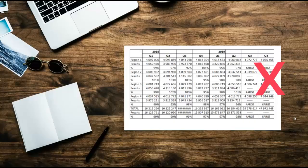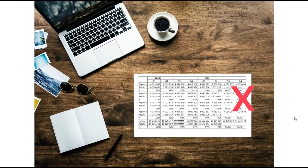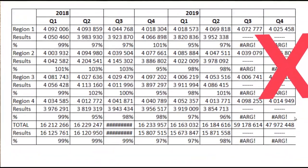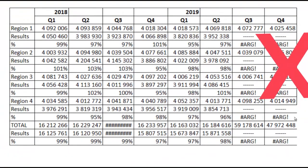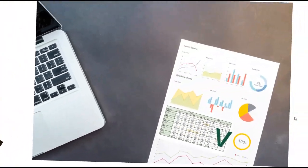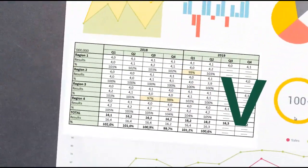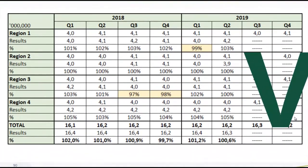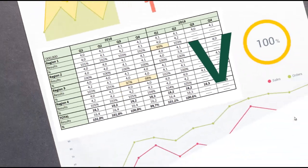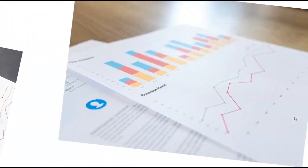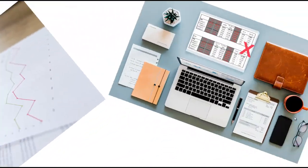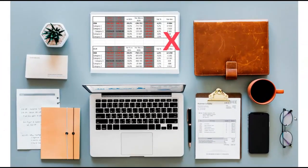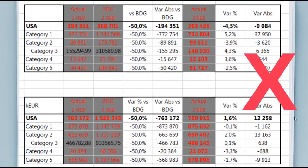How your reports and other documents are formatted is more important than you may think. In most cases, the people working with your documents don't have an alternative source for this data, so they judge your work on two bases: whether the numbers look realistic, and the general look of the report. Sloppy formatting may make them think you have the same approach to data accuracy.